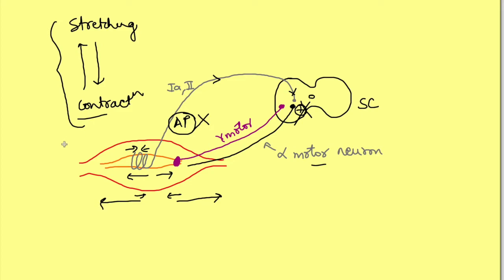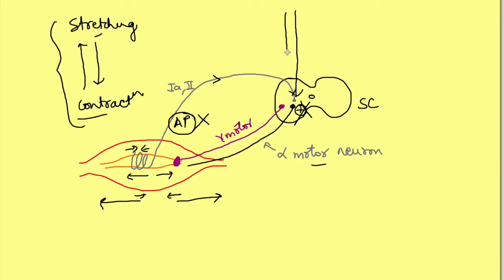But if this reflex always operated, we would never be able to make voluntary movement — whenever we try to contract, the action potentials would be lost and the muscle would relax. So what happens? When we want to make a voluntary movement, the pyramidal tract excites both the alpha motor neuron and also the gamma motor neuron. Does that prevent this paradox? Yes, it does.